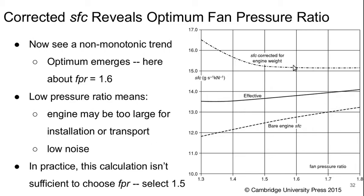Basically, the model doesn't penalize higher fan pressure ratios enough. So, from the wisdom of the textbook author, we will actually choose a fan pressure ratio of 1.5 moving forward for our design.